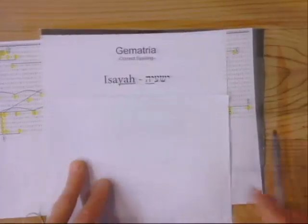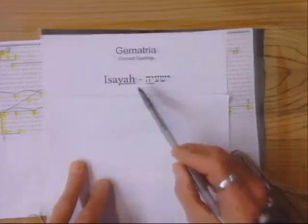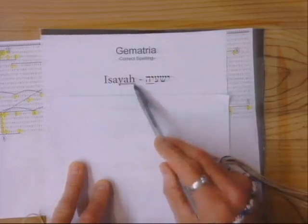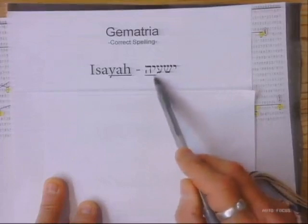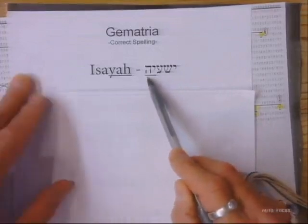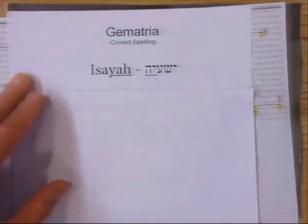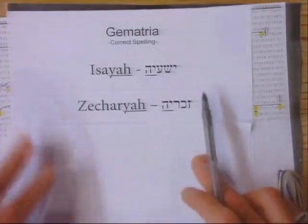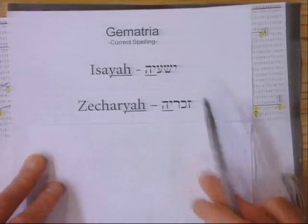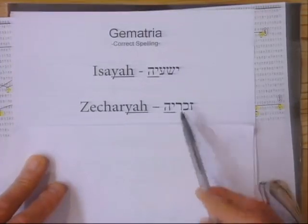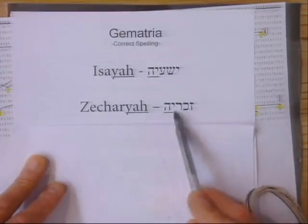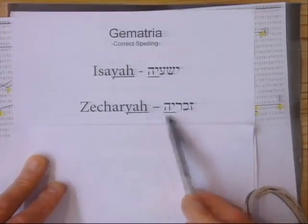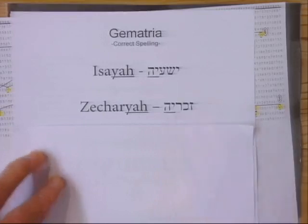Can we get a zoom in on this? What you notice is you have Isaiah — Yah — and there's the Hebrew spelling, and of course the Yod-Heh. Yah. You probably already know where I'm going with this. Then you have Zechariah — Yah — and there's the Yod-Heh. Yah.